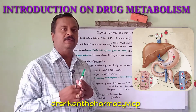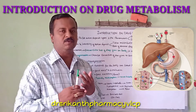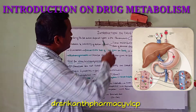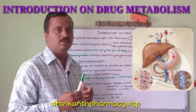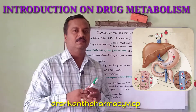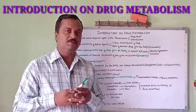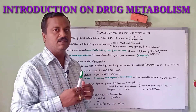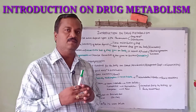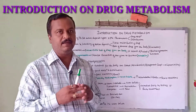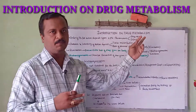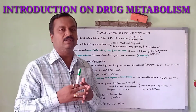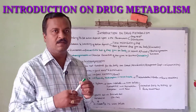In earlier videos, I explained in detail the absorption process as well as the distribution process. In this class we are enlightening the introduction to metabolism. The four parameters are: absorption, distribution, metabolism and excretion. We are enlightening the third pharmacokinetic parameter, that is metabolism — how the drug will be metabolizing and what the importance is.